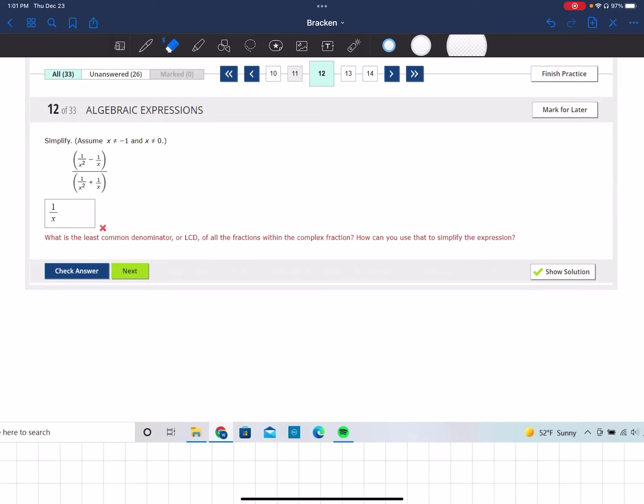Okay, this is problem 12 of 33. It says simplify, assume that X does not equal negative 1 and X does not equal 0.